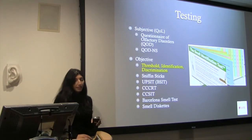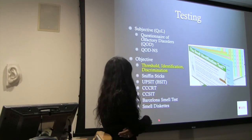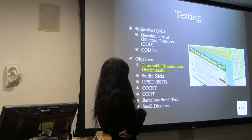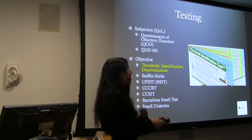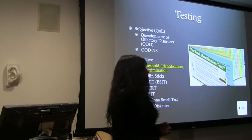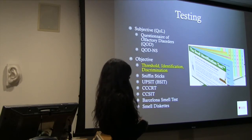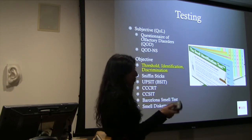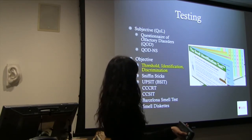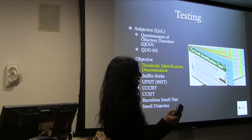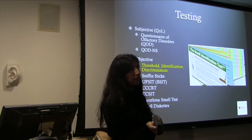There are different methods of testing. The ones you're probably most familiar with are the objective tests. Sniff and Sticks is one of the only tests that tests for all three parts of olfaction: threshold, identification, and discrimination. The one we use most commonly in the United States is the UPSIT. Some people use the brief UPSIT — the BSIT — which has only 12 items instead of 40. We've shown that the brief UPSIT is really just a screening tool and won't give you very much useful information.